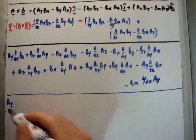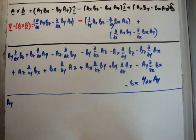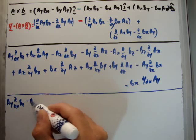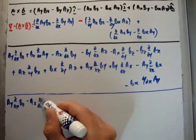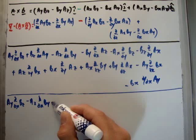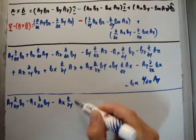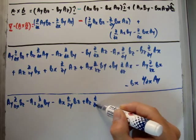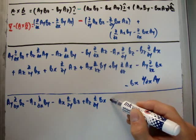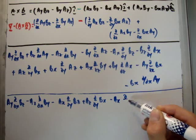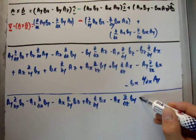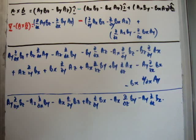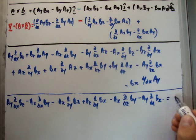So we're going to have, collecting the terms with a, we're going to have a sub y del del x b sub z, minus a sub z del del x b sub y, minus a sub x del del y b sub z, plus a sub z del del y b sub x, minus a sub x del del z b sub y, minus a sub y del del z b sub x. Alright? And that's what we'll say, we're going to call that part one.